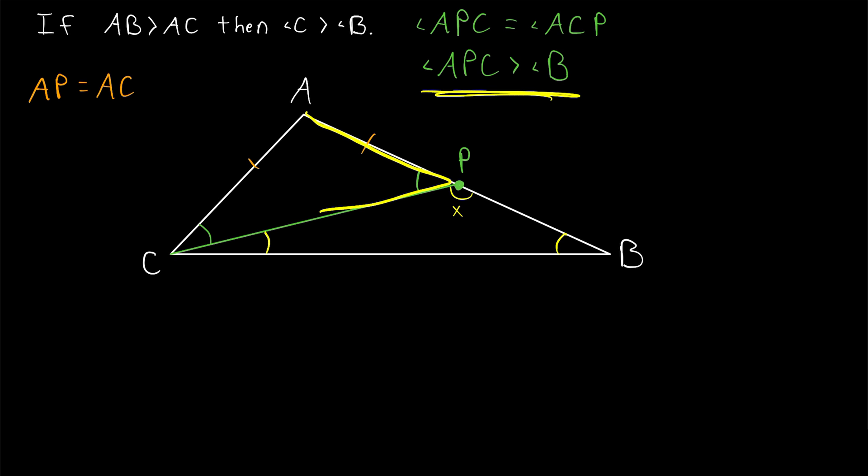So that's the exterior angle theorem telling us that angle APC is greater than angle B. And you can see where this is going. We already know since this is an isosceles triangle that angle APC is equal in measure to angle ACP. So this means that angle ACP is also greater than angle B.